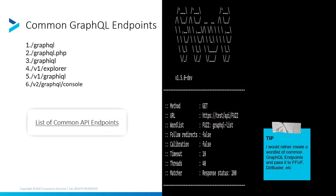These are the common GraphQL endpoints you can find. GraphQL has a web IDE in which you can directly interact with the servers on your web browser, whereas the endpoints you need to play around with in Postman, Burp Suite, or any software that can help you repeat the request with the payload you want.